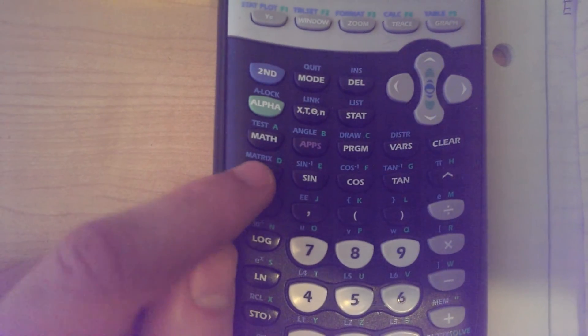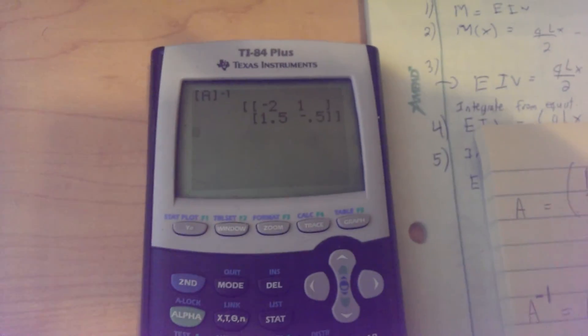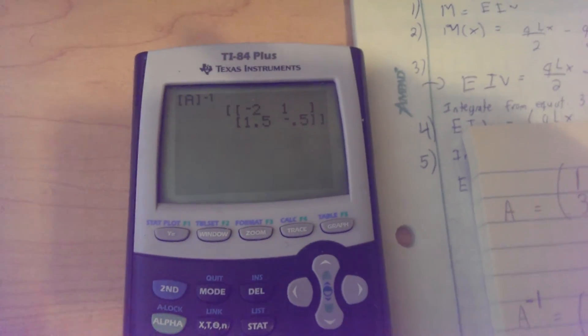Yeah, there it is. I'm going to press that, and enter. And there you go. Negative 2, 1, 1.5, negative 0.5.